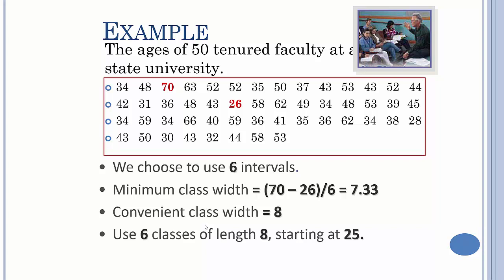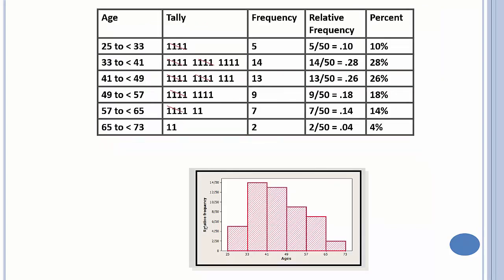6 classes of length 8 starting at 25. So 25 to 33, and see how it's less than 33, so that means if somebody was 33 years old they would go in the second class, the 33 to 41 range. So this is what they mean by left-hand inclusion. We include the lower bounds of each class. We do not include the upper bounds.